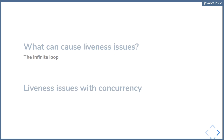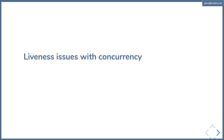But when you are talking about concurrency, there are three specific issues that can affect the liveness of your application. The first thing is something called deadlock. Second, something called live lock. And the third thing is something called starvation. I'm going to explain what these three issues are and how they affect the liveness of an application when dealing with concurrency.